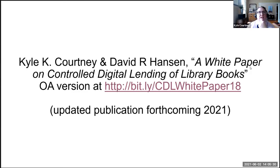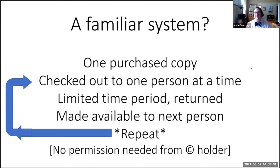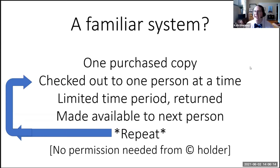When we wrote the white paper in 2018 it wasn't necessarily incredibly controversial, though some people disagreed. But the last 15 months have proven the necessity for something like controlled digital lending — being able to replicate that library loan period. This should be a familiar system: if a library acquires a copy, it is checked out to one person at a time for a limited time period, returned, and then made available to the next person in the queue. You repeat this process over and over, framed through the lens of both fair use and first sale.